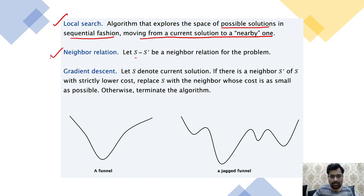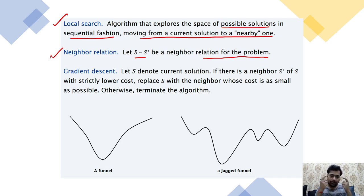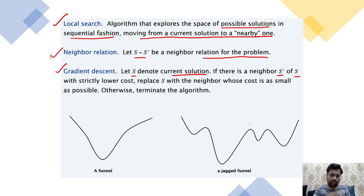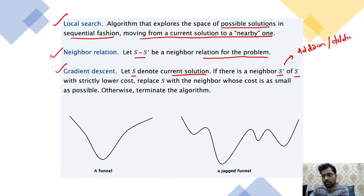The neighbor relation is represented as follows. As per gradient descent, let s denote the current solution. If there is a neighbor to s — meaning the next solution, called s-dash — s-dash can be obtained by addition or deletion of some values compared to the current solution.